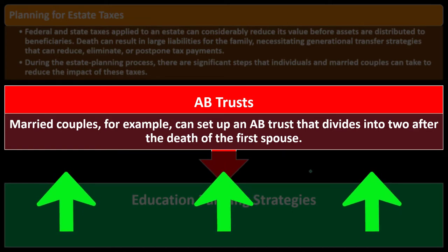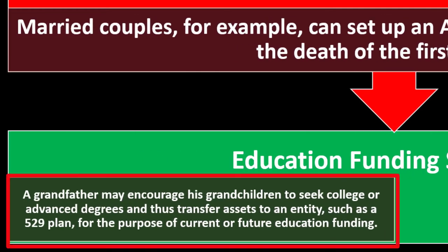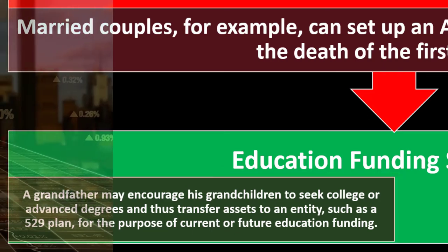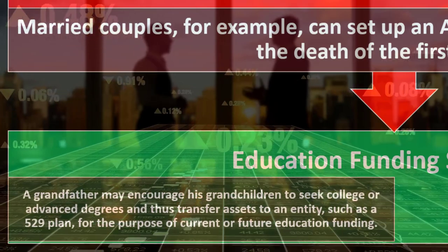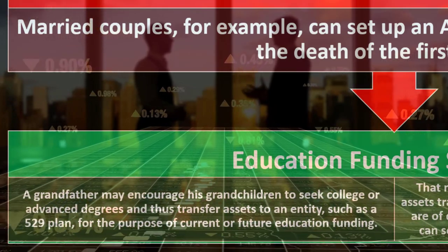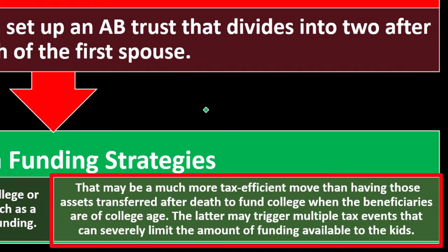Education funding strategies: a grandparent may encourage grandchildren to seek college or advanced degrees and transfer assets to an entity such as a 529 plan for current or future education funding. This can be more tax-efficient than having assets transfer after death to fund college, because it lowers the taxable estate now and avoids triggering multiple tax events later.